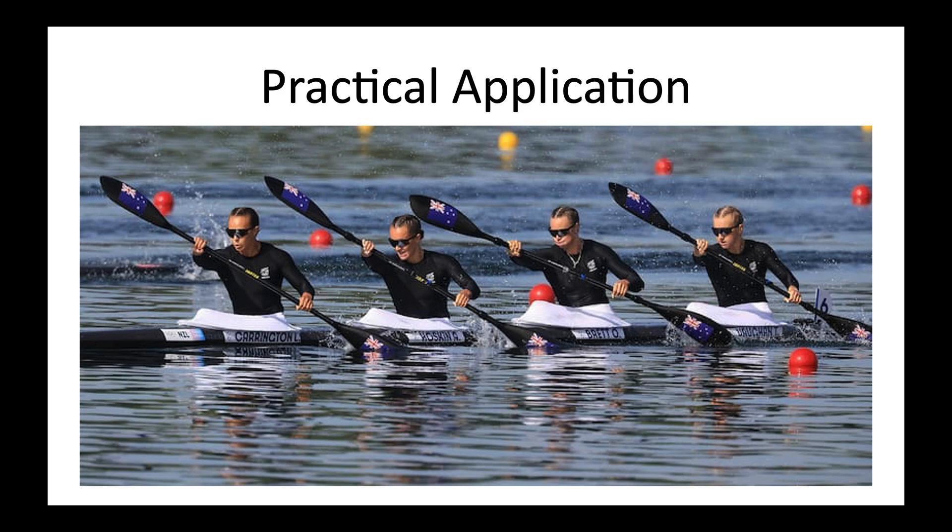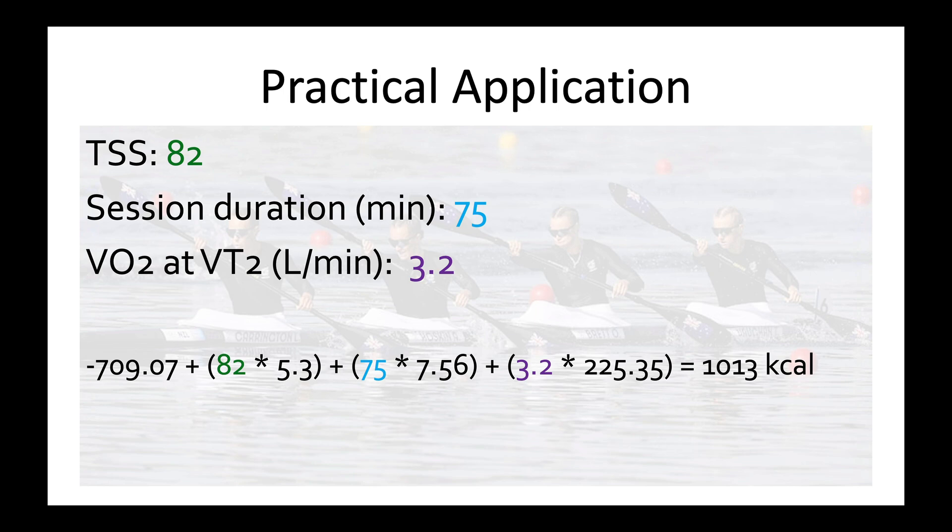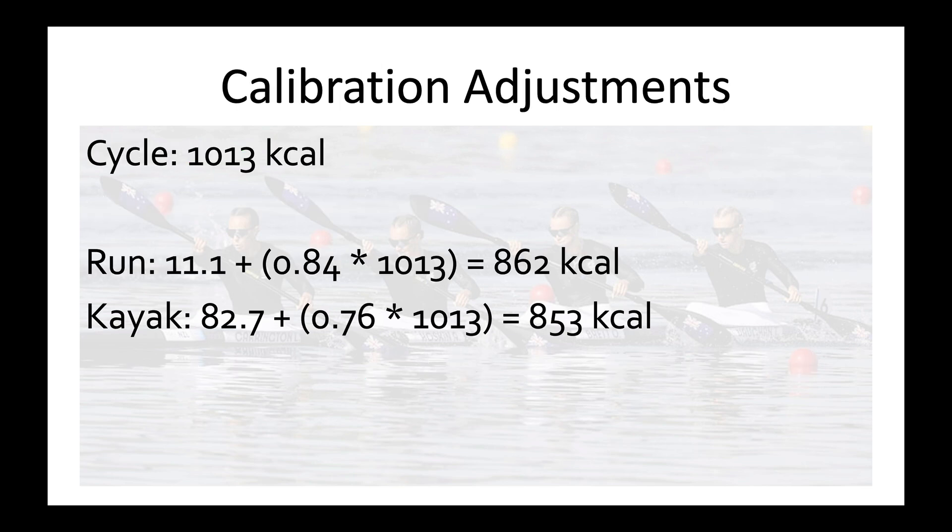So finally, how can we actually use this with athletes? It will vary slightly depending on which measure of training load you prefer, but we can look at an example using TSS. If the TSS is 82 for a 75 minute session, and the athlete's VO2 at VT2, which is a measure that is fairly easily obtainable from any lab testing, but could also be estimated from FTP power, is 3.2. So the bottom line of numbers is something that looks complicated, but it's simple math based on numbers provided in the paper. So in this context, we get an estimated value of 1013 calories for this session. Now depending on the sport, we can make the appropriate calibration adjustment. Again, these numbers are all included in the paper, see tables 2 and 3. And so we can get an estimated calorie expenditure that is adjusted based on the exercise mode. If it was a run session with those same values for TSS and duration, it would be about 860 calories, and for kayak it would be about 850.